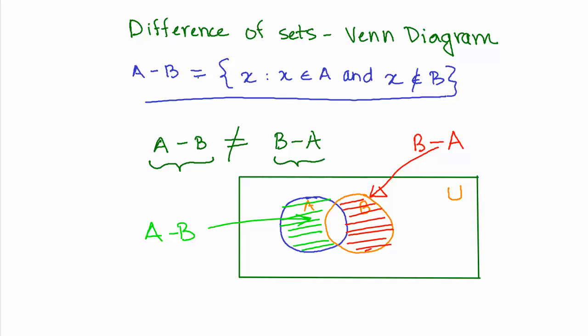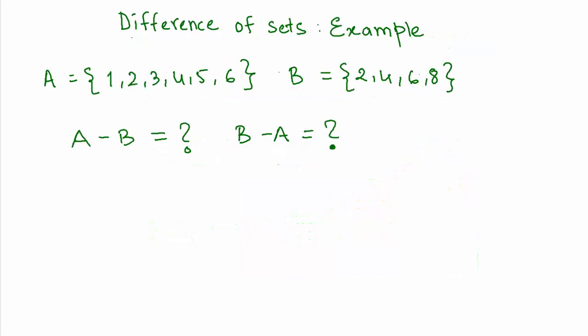Let's look at an example. So we have a set A which has 1, 2, 3, 4, 5, and 6. And the set B has 2, 4, 6, and 8. Now we are supposed to find out A minus B.